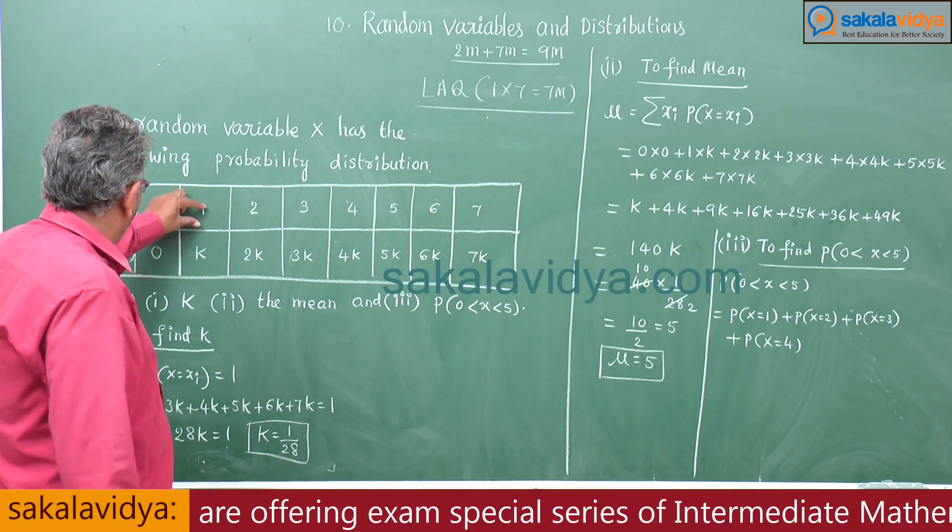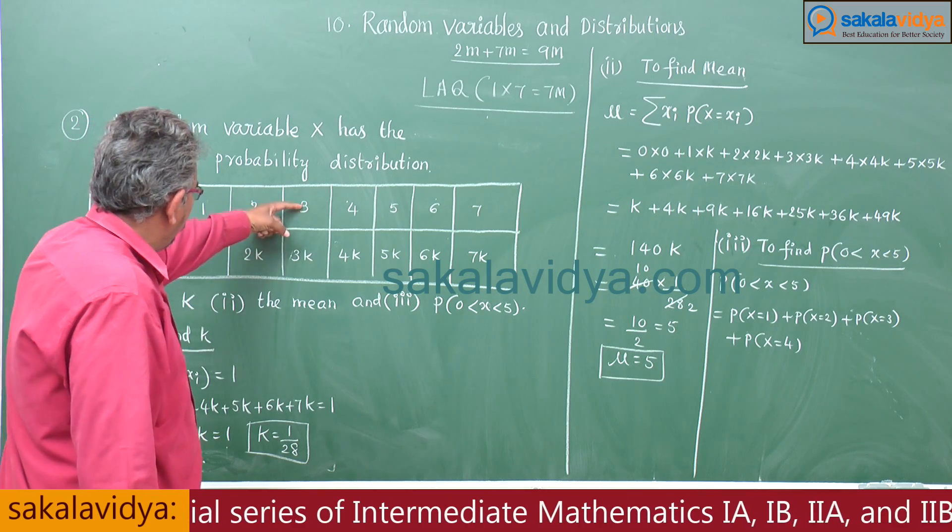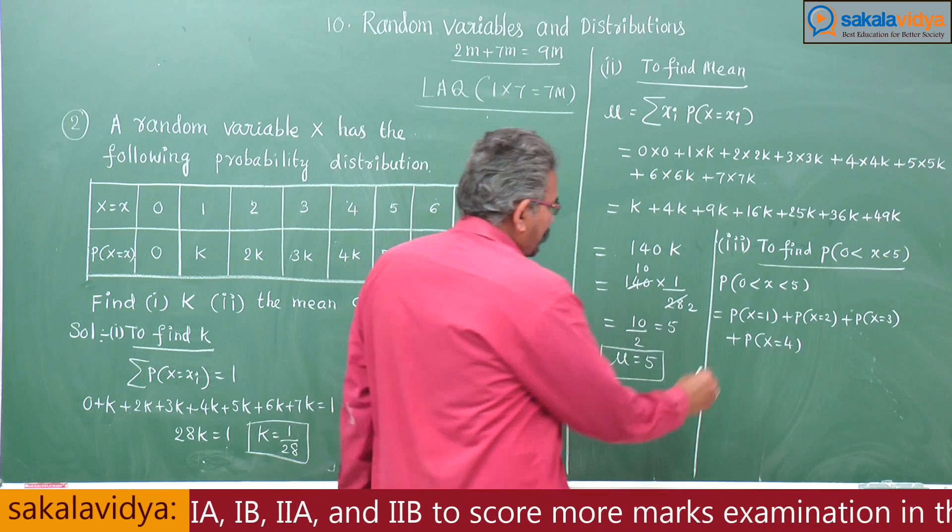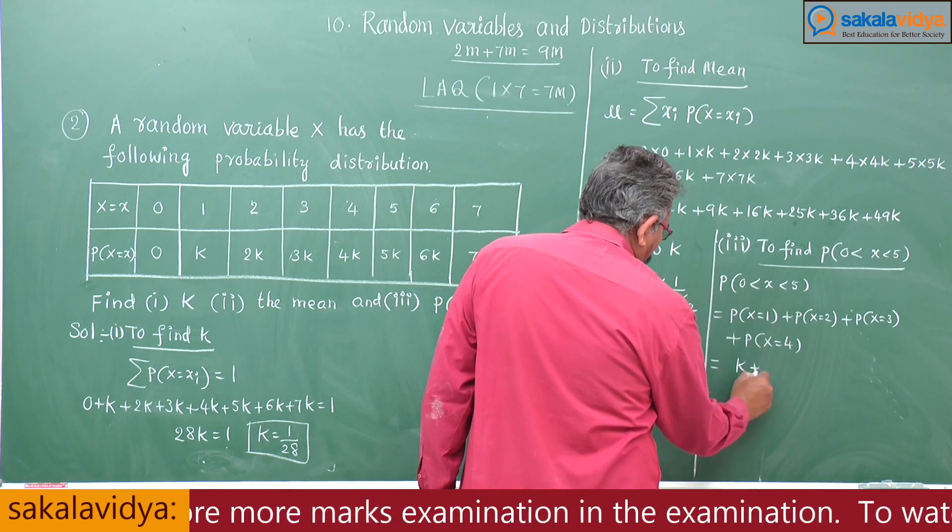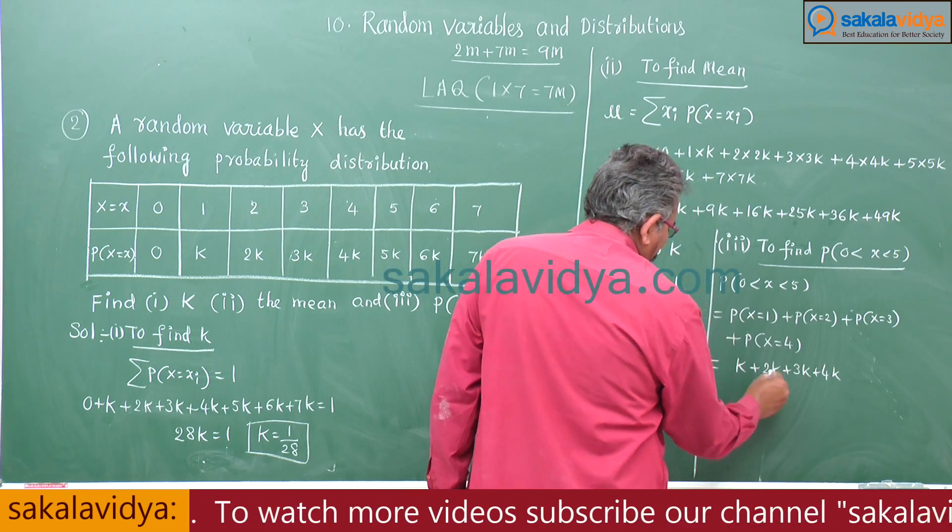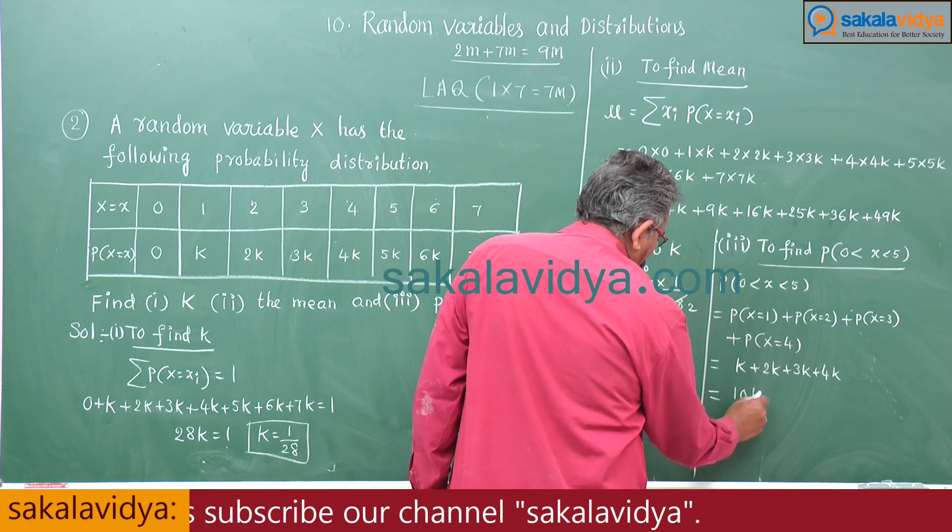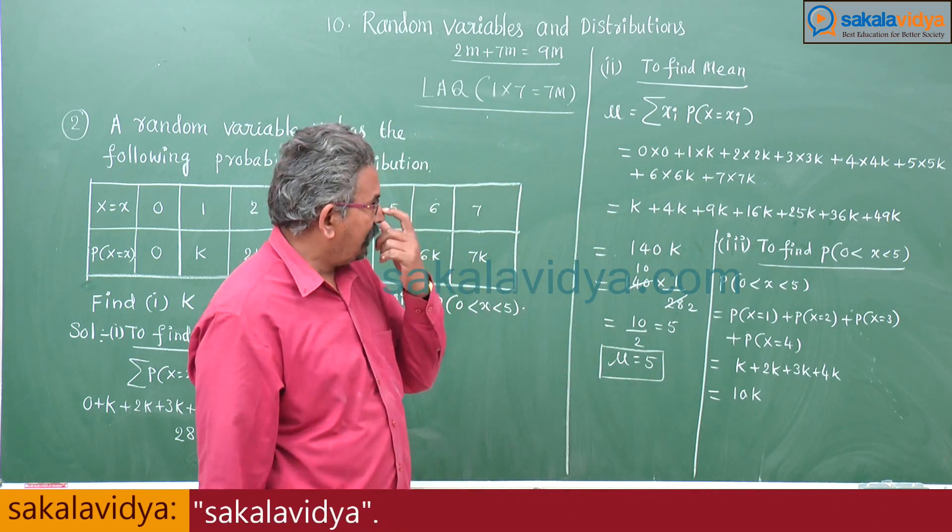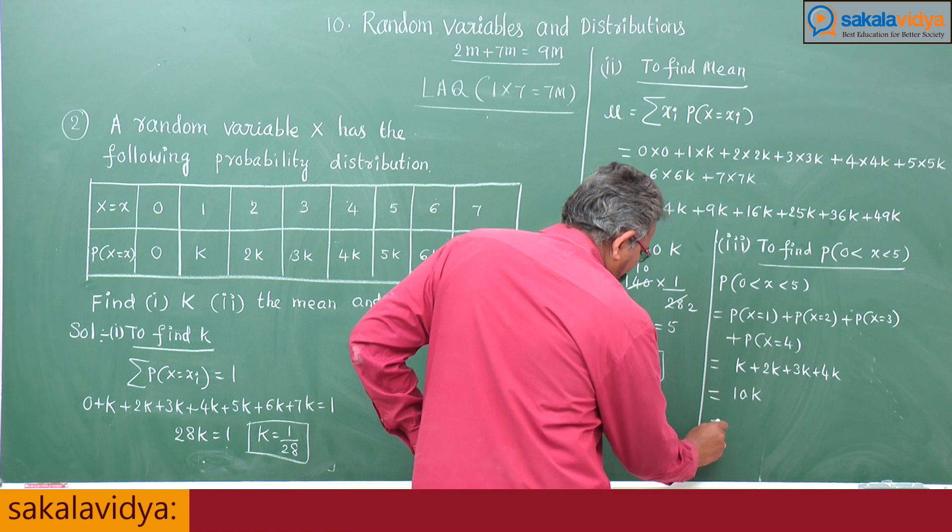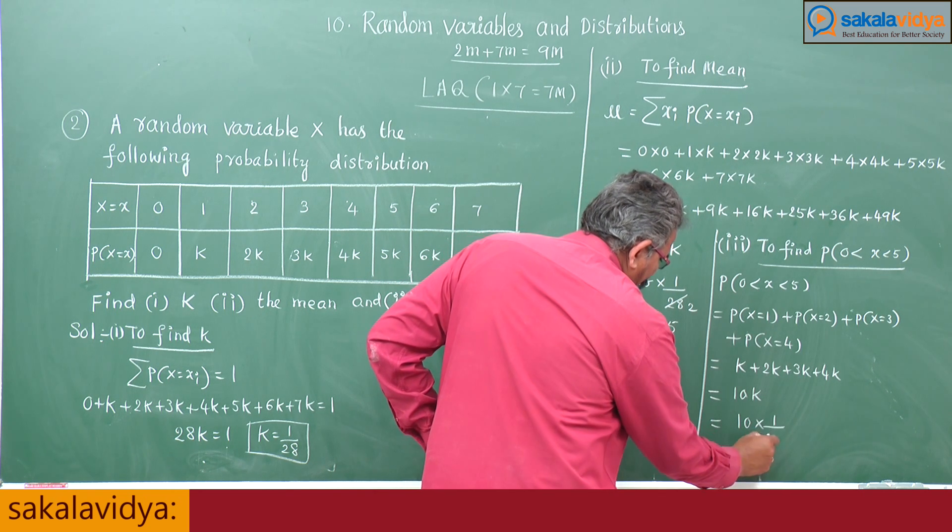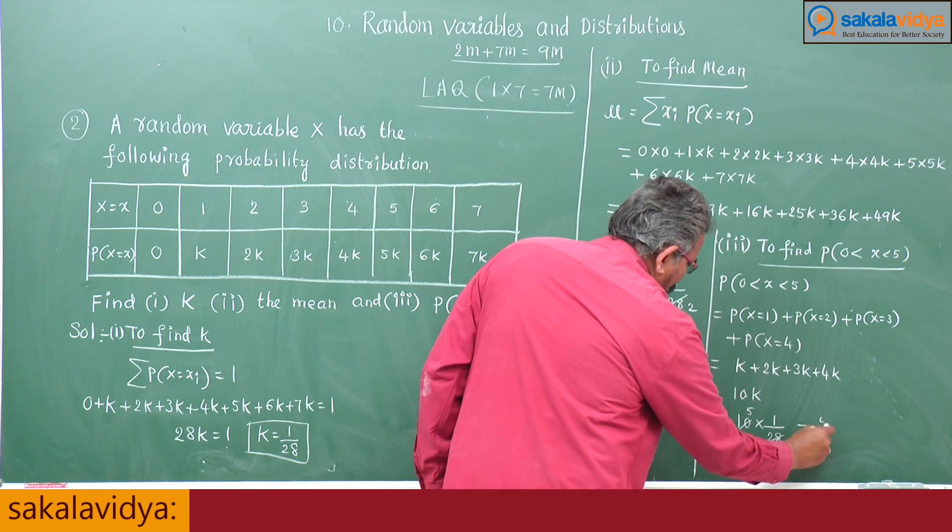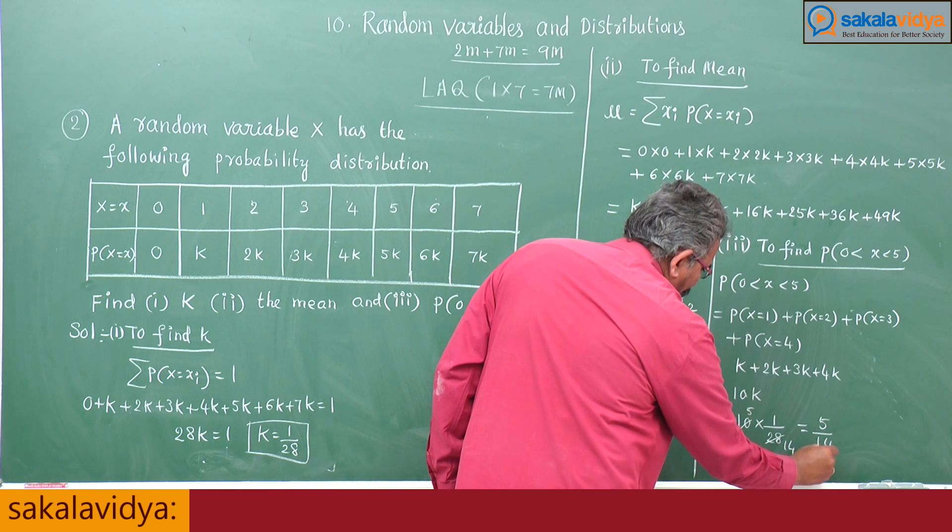So P of X equals 1 means K, 2 means 2K, 3 means 3K, 4 means 4K. That means K plus 2K plus 3K plus 4K equals 10K. We have to substitute K value. K value is 1 by 28, so this is 10 into 1 by 28, which will be 5 by 14. This is the answer.